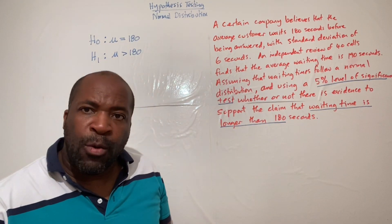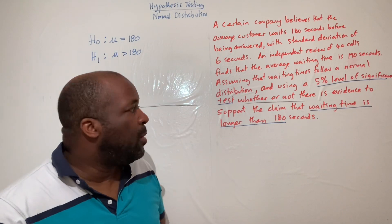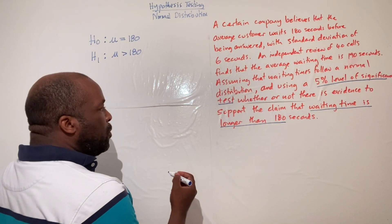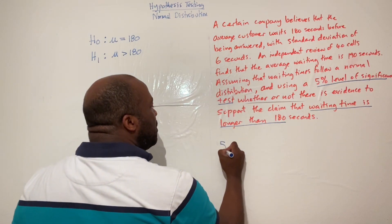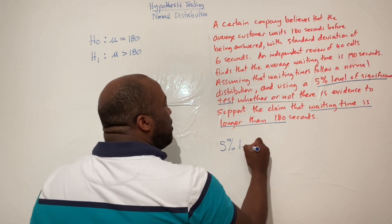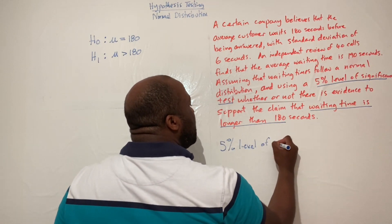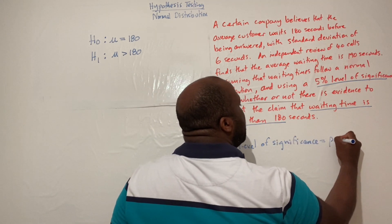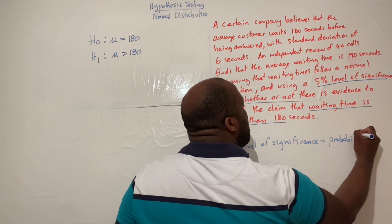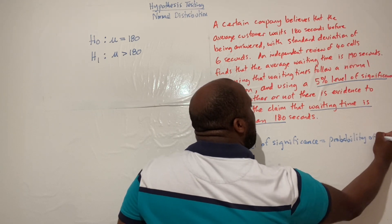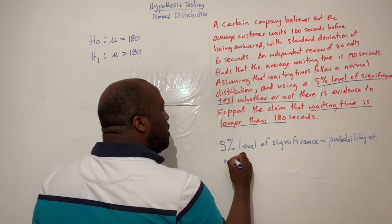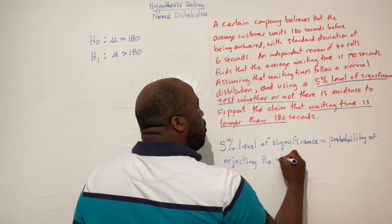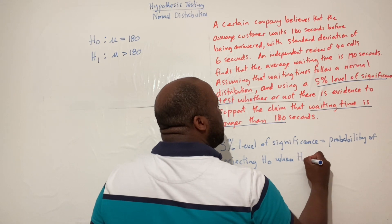To summarize: the five percent level of significance equals the probability of rejecting H-naught when H-naught is actually true.